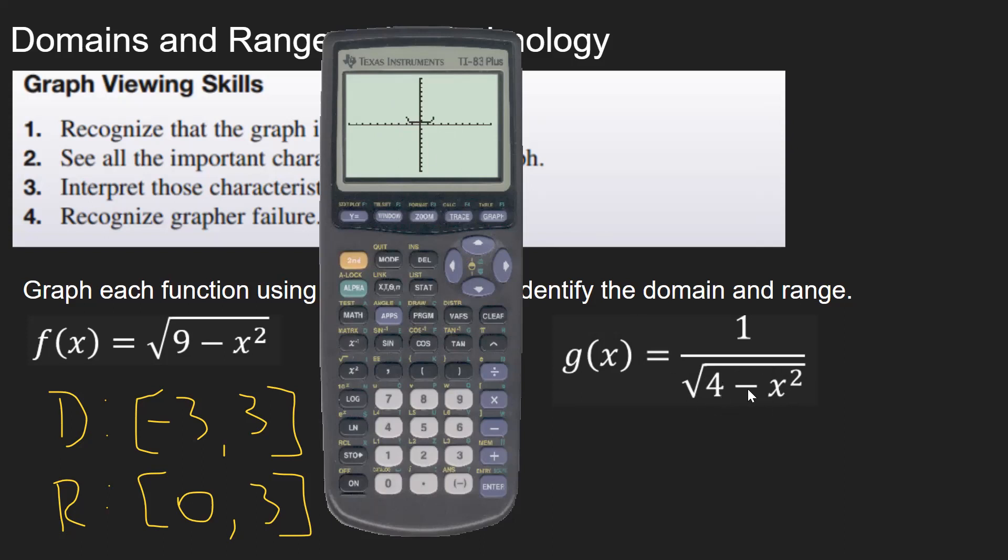The numbers that you could plug into the square root would be from negative two to two. But if you plug in two or negative two, square root, you get four, subtract from four, you're going to get zero in the denominator. So that implies that the domain is going to be from negative two to two.